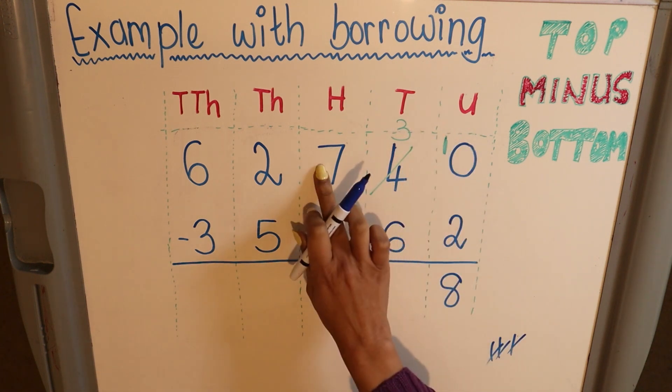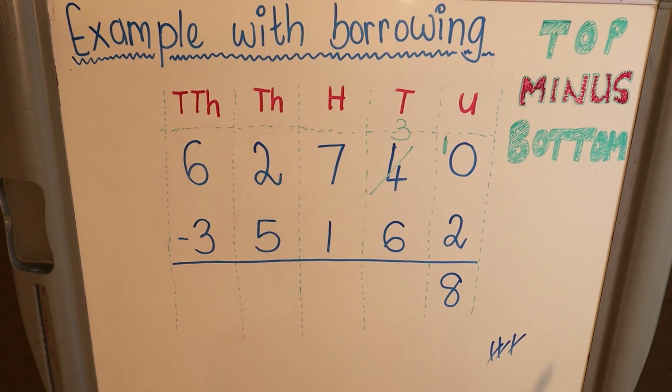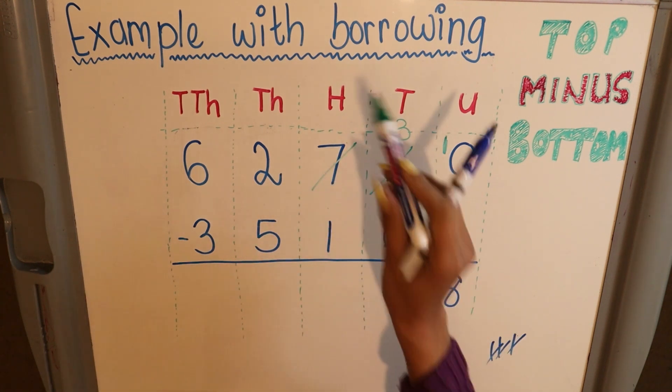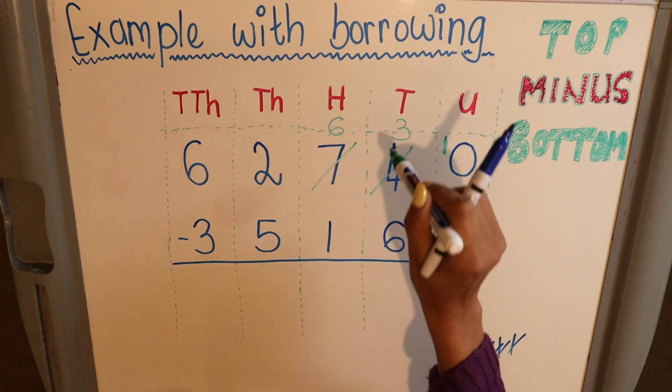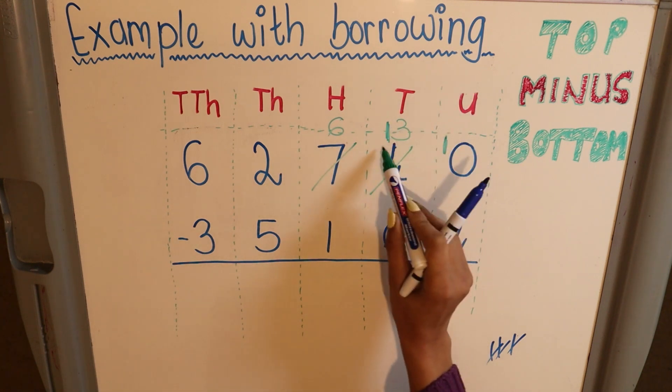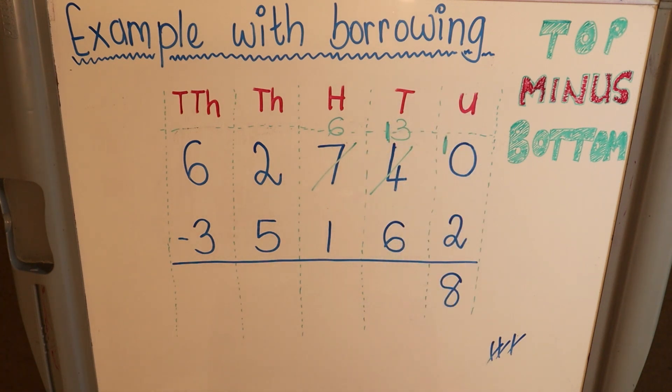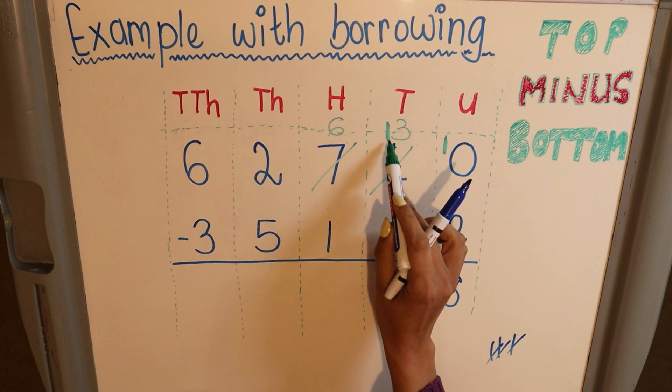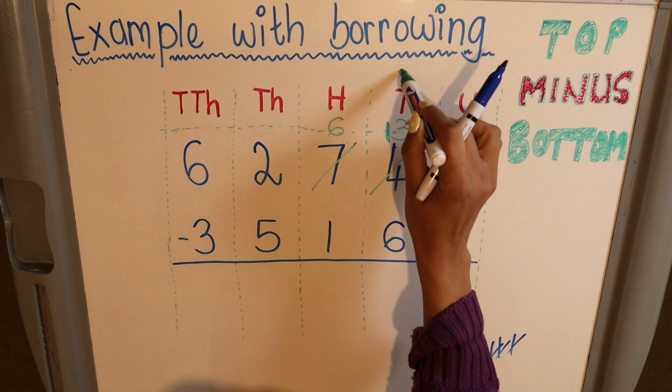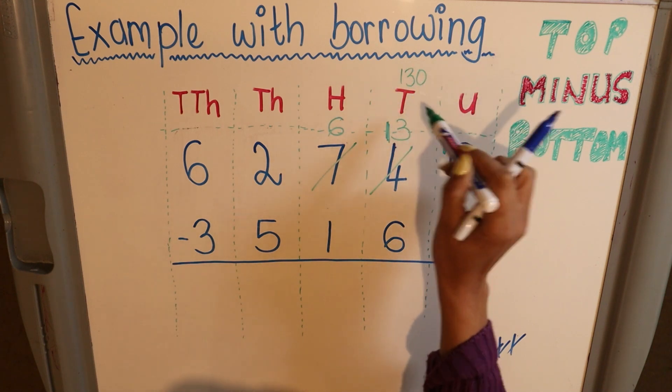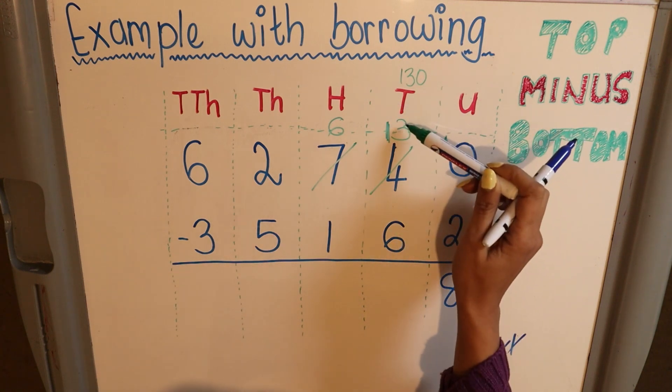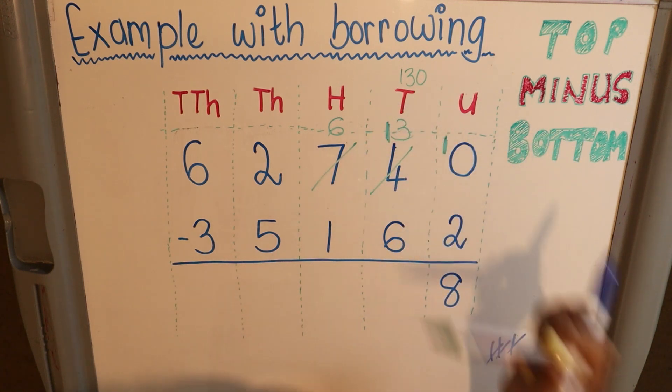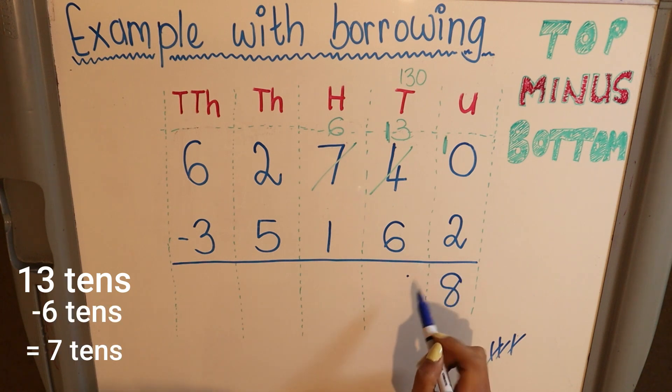So I'm going to borrow from my hundreds over here. I have 7 in my hundreds. I take 1 away, I now have 6 left. And the 1 that I borrowed I put in the place of the tens, so I have 13. Please note that is actually a 100 that you carried over, and that's actually a 30, so technically this 13 is actually 130. So 130 minus 60, but we're going to look at it as 13 minus 6, which is equal to 7.